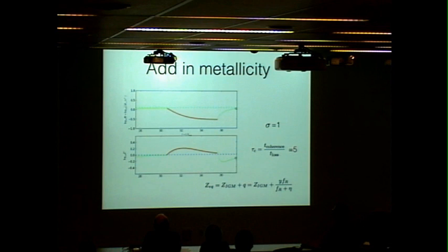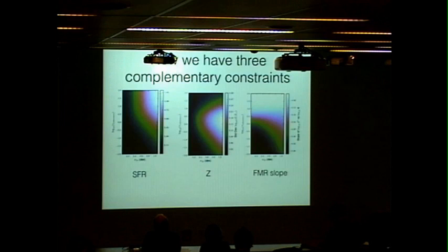So they behave very differently. So they give you complementary constraints. And not only can we measure the scatter in the metallicity here, you can also measure the correlation. So that gives you three sort of independent constraints.